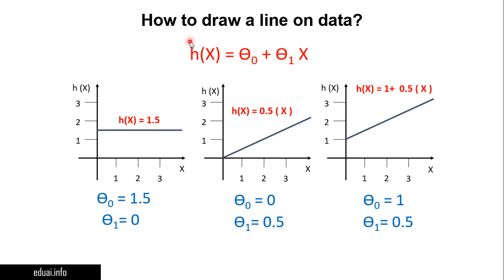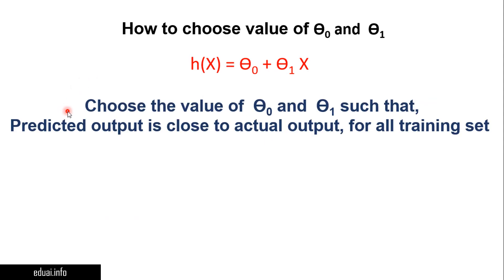This is how your machine draws a line over the data. But the important question is: how does the machine choose the values of θ₀ and θ₁? Currently we are providing those values ourselves. The machine must choose θ₀ and θ₁ such that the predicted output is close to the actual output for all training samples.